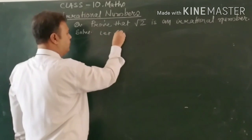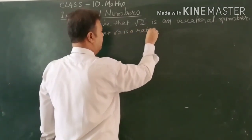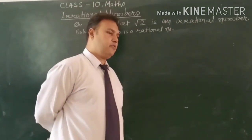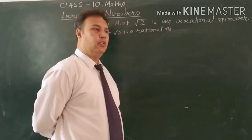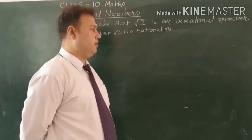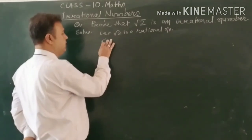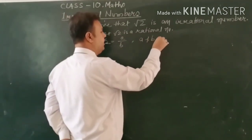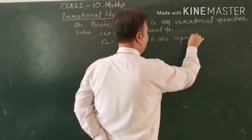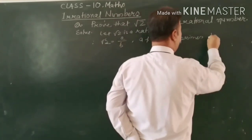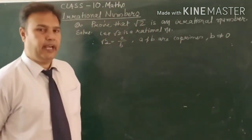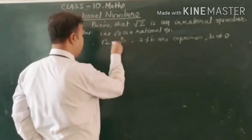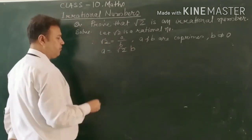Let root 2 be a rational number. We use a contradiction method — we first let it be a rational number, then we will prove our assumption is wrong. So we can write root 2 is equal to a upon b, where a and b are co-prime, and b is not equal to 0. Co-prime means a and b have no common factor other than 1.